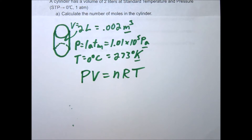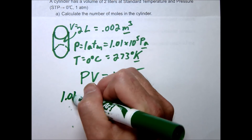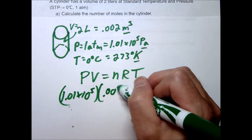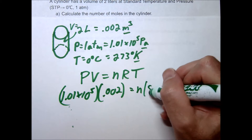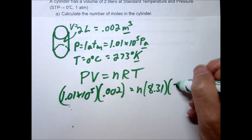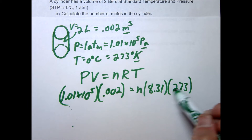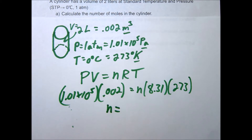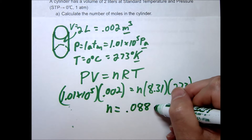Substituting in the variables: pressure is 1.01 times 10 to the 5th, volume is 0.002, n is what we're solving for, the gas constant is 8.31, and temperature is 273 kelvins. Notice if you forgot to convert temperature you would get a zero, which would fail. Solving for the number of moles, you should get about 0.088 moles.